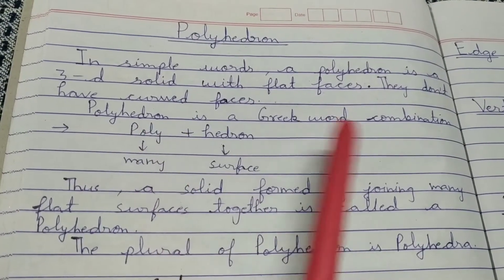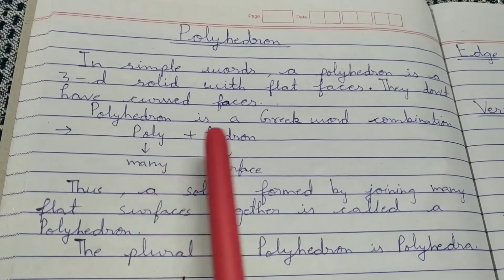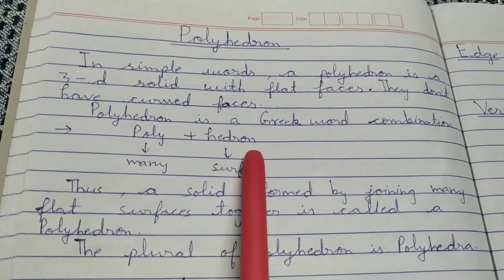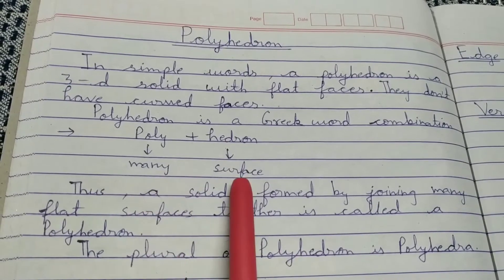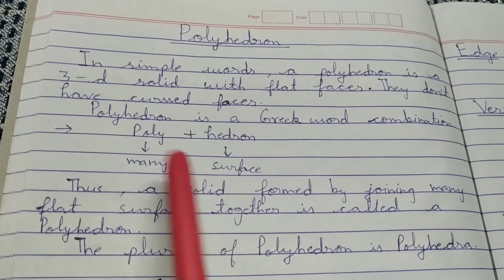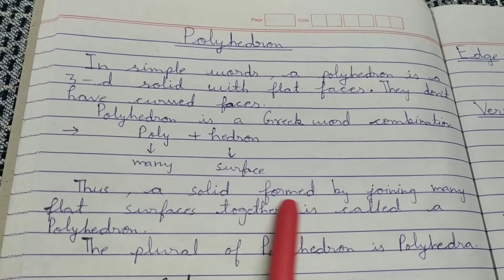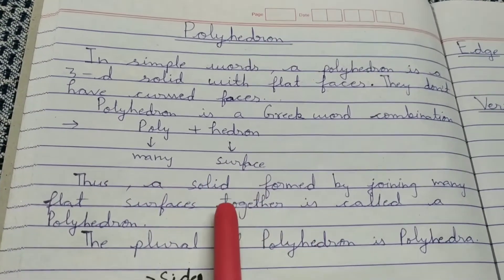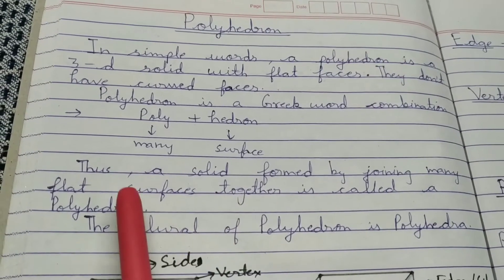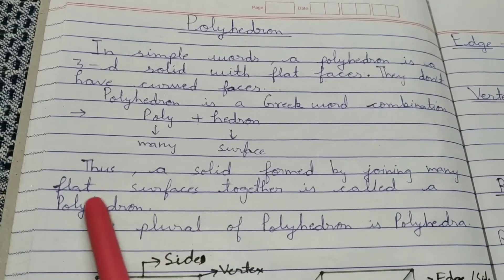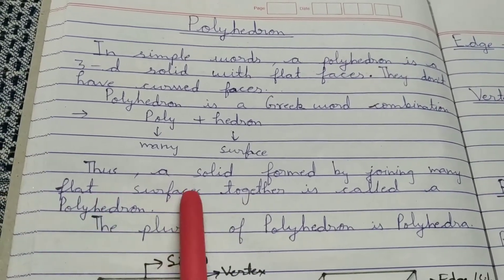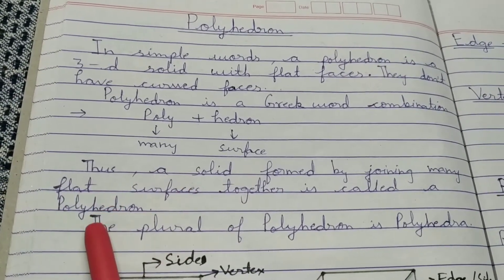Polyhedron is a Greek word made from 'poly' and 'hadron'. Poly means many and hadron means surface. So a polyhedron has many surfaces and these surfaces are flat. A polyhedron is a solid formed by joining many flat surfaces.